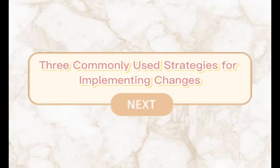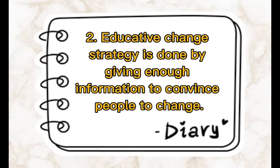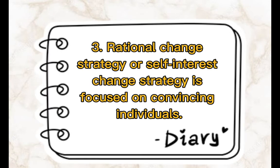Three commonly used strategies for implementing changes. One: force change strategy — works by giving orders and enforcing the plans. Two: educative change strategy — done by giving enough information to convince people to change. Three: rational change strategy, or self-interest change strategy — convinces individuals that the change is in their personal interest.